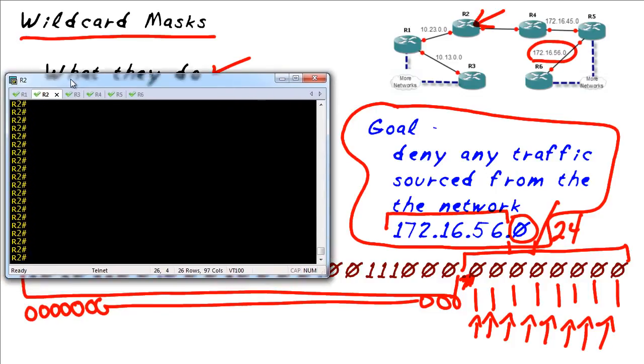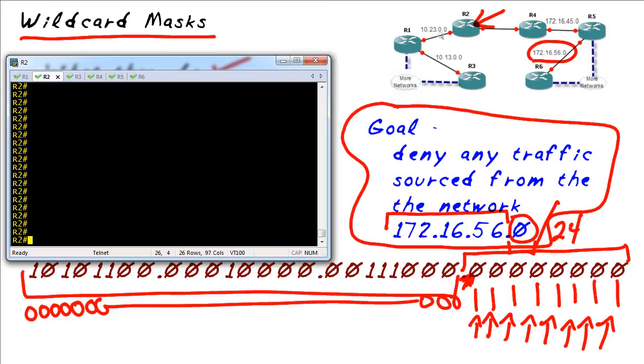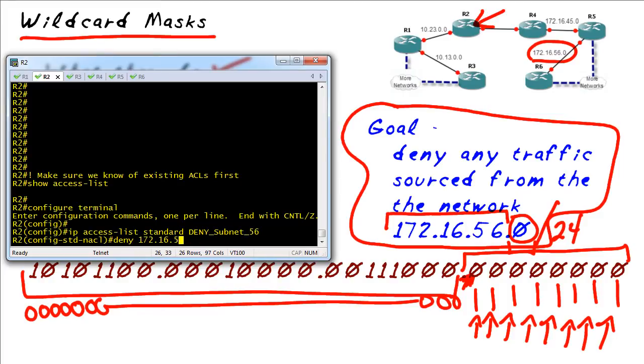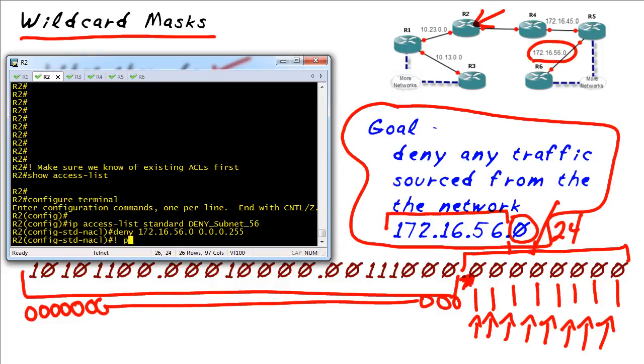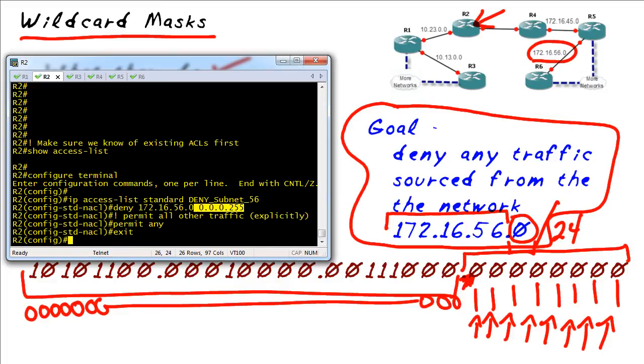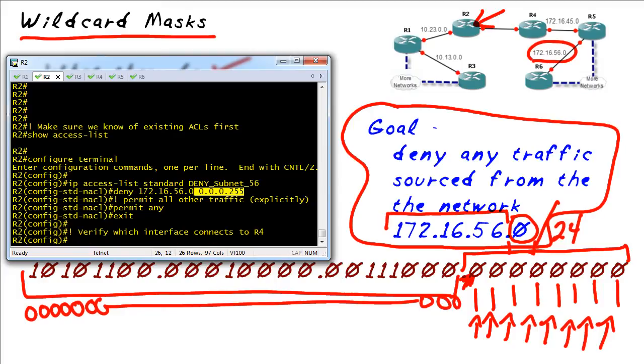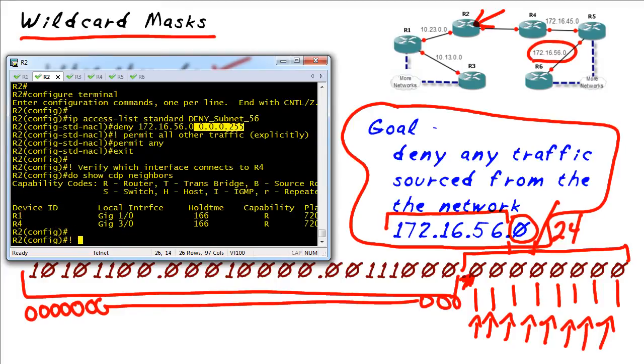Let me show you, with a practical application of this, we'll bring over R2. So this represents this R2 on our network, and let's go ahead and put in this exact access list. Now, a couple of things, we want to make sure that we know of all the existing ACLs first, before we just start adding one. So I'm going to take a look to make sure we don't have any ACLs, and then from configuration mode, we'll create an access list that's going to deny the 172.16.56 network, and pay special attention to that wildcard mask. The wildcard mask right there, the 0.0.0.255, is what's telling that ACL that the last octet, the all ones, doesn't have to match, could be anything.